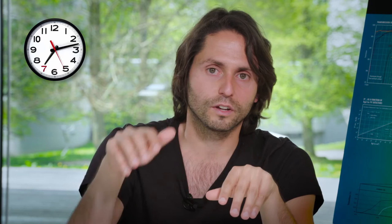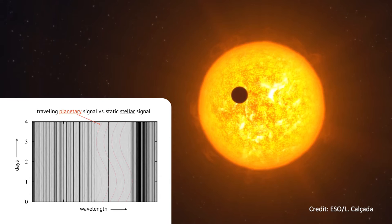Another technique to measure planet atmospheres is to obtain spectra of their day sides. This is completely different from transmission spectroscopy because it can be done also with non-transiting planets. Basically, we obtain spectra in different nights, and in each night the spectrum of the planet is at a different position — this is the way we can separate it from the static stellar spectrum.